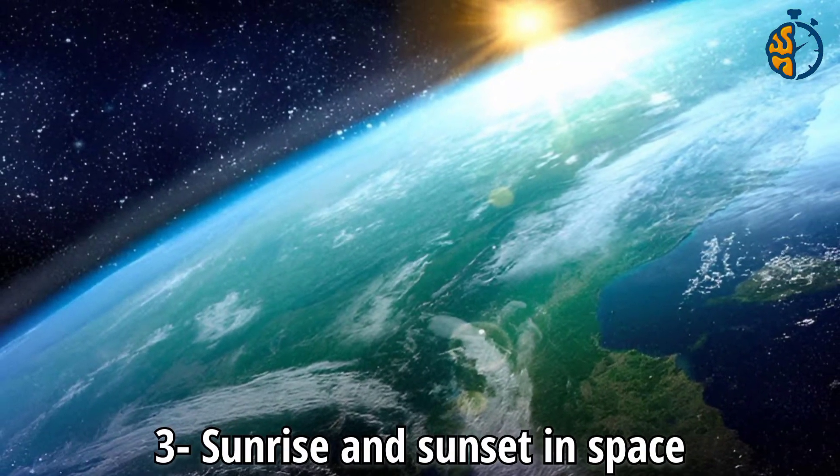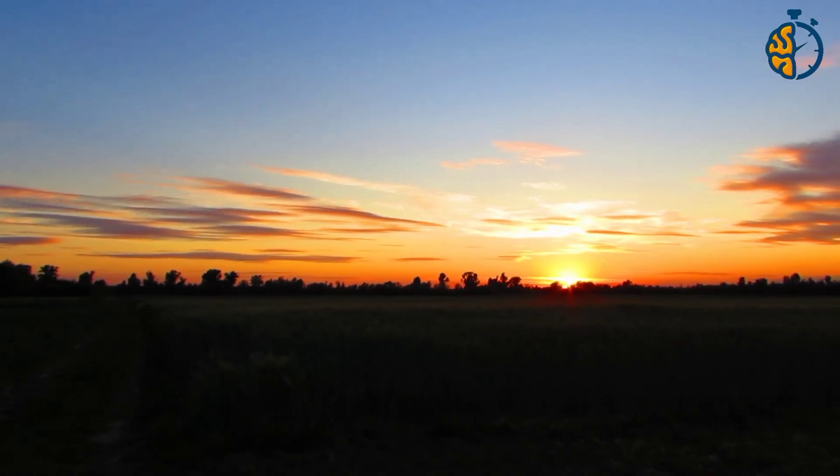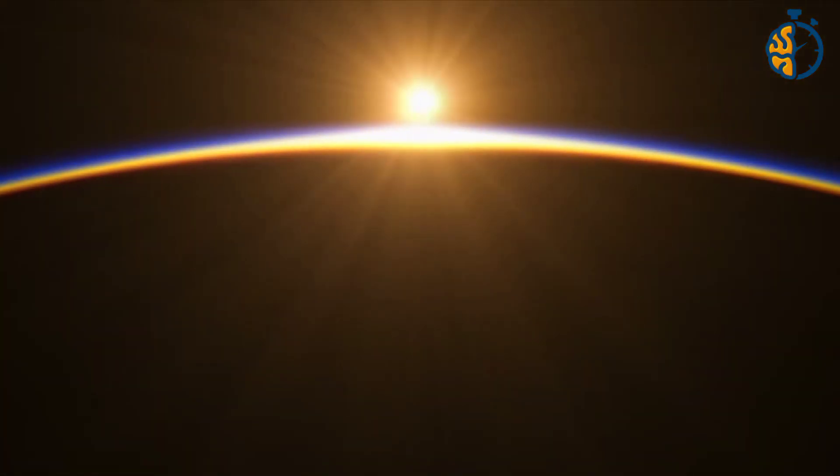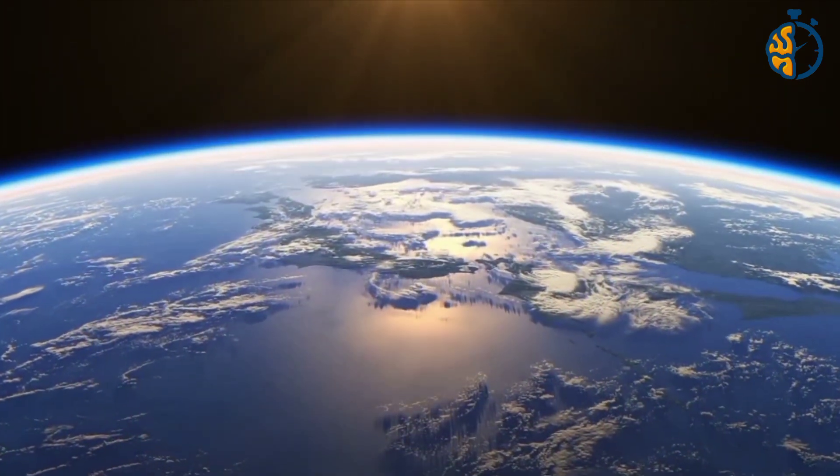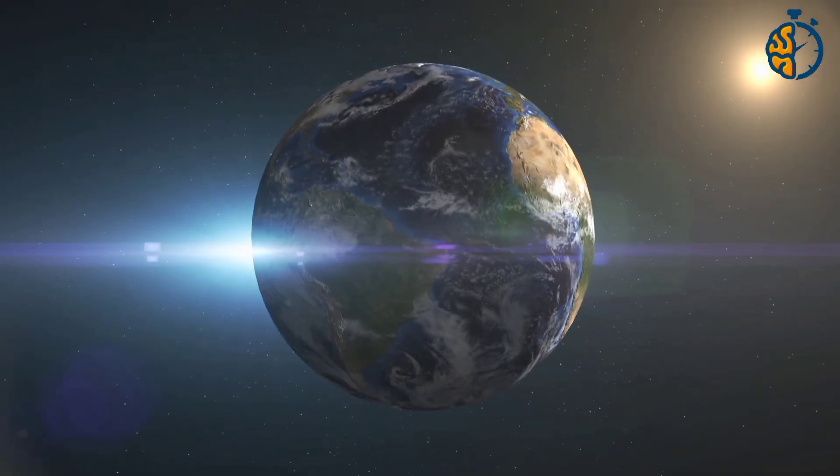Number 3. Sunrise and sunset in space. On Earth, the sun rises and sets once, but in outer space, the sun rises and sets 16 times per day, as the sun rises and sets at a rate of every hour and a half throughout the day in space.